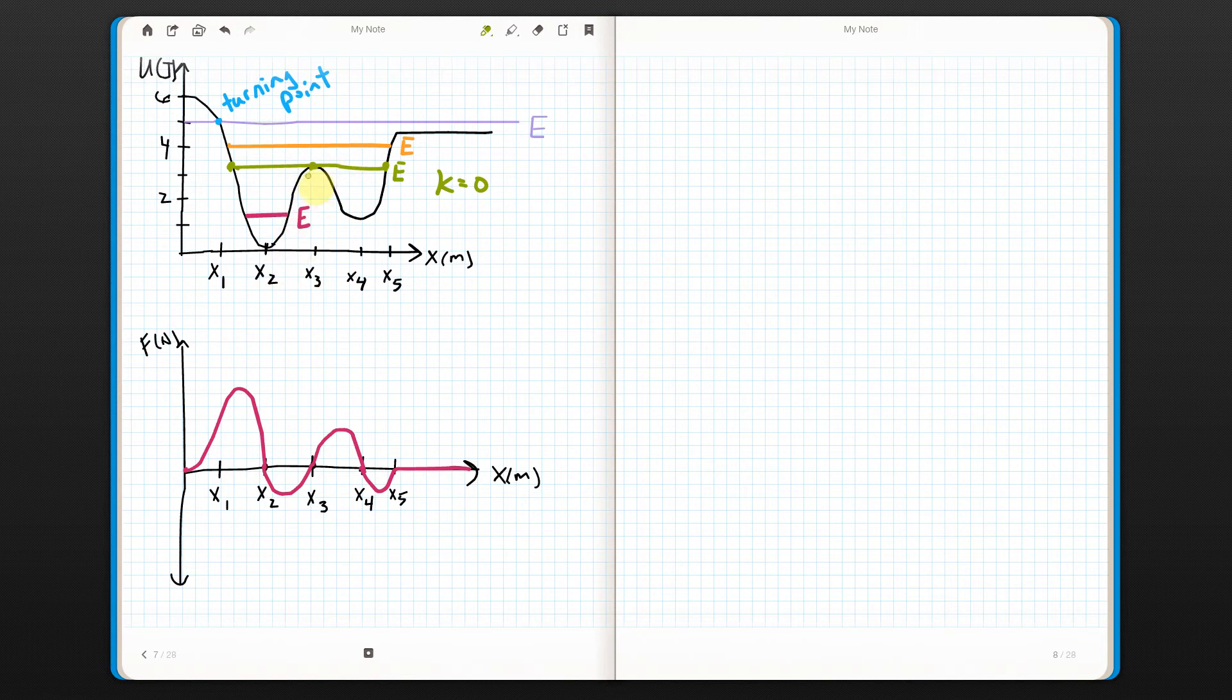So if it gets nudged either way, it is going to zoom away. That is called an unstable equilibrium right there. It's at equilibrium because it has zero force on it. It's not moving.